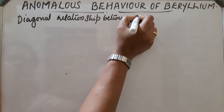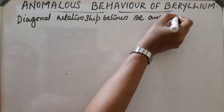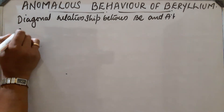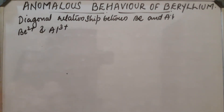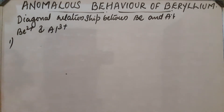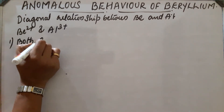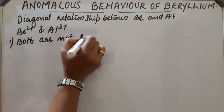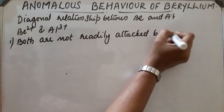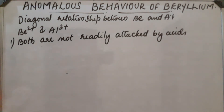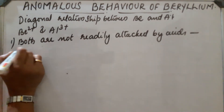Diagonal relationship between beryllium and aluminium: the ions Be²⁺ and Al³⁺ have almost the same charge-to-radius ratio, so they show similarities in properties. First similarity: both are not readily attacked by acids, because these metals form an oxide film on their surface.